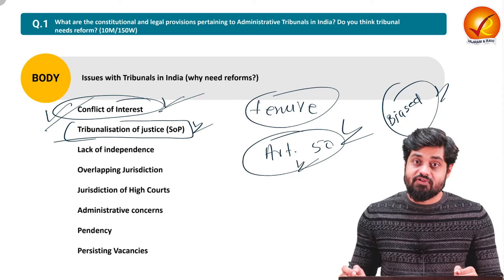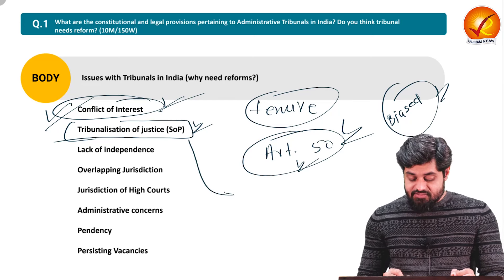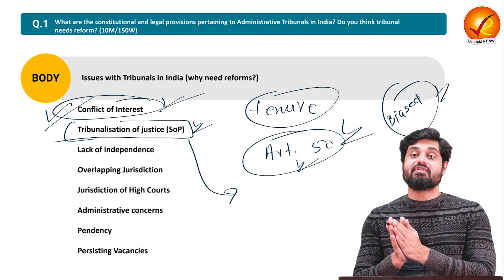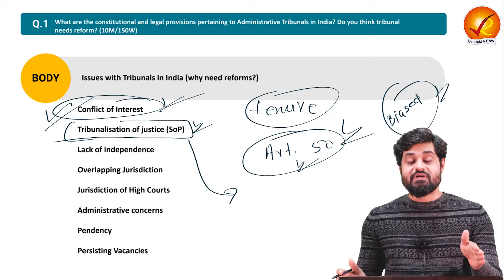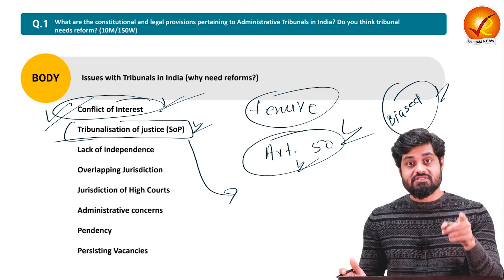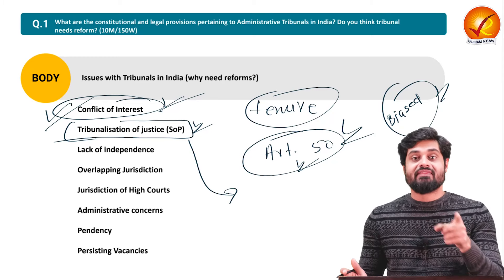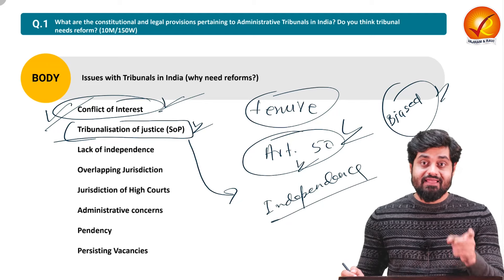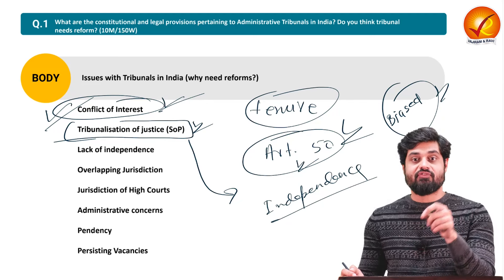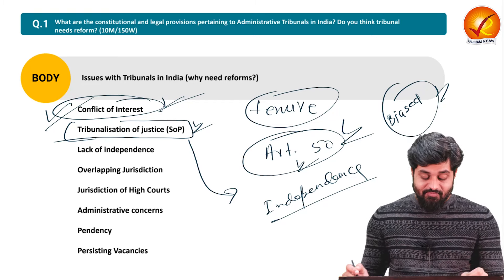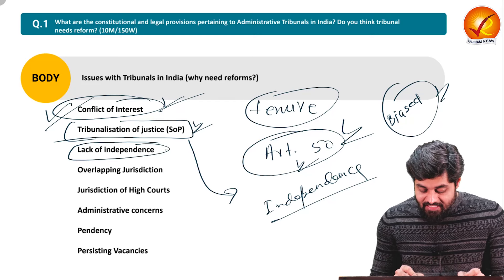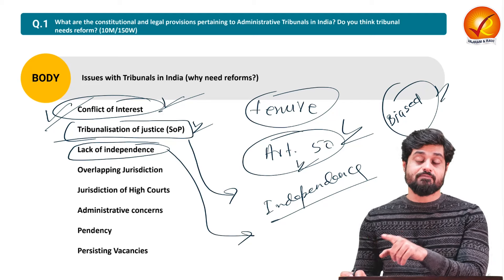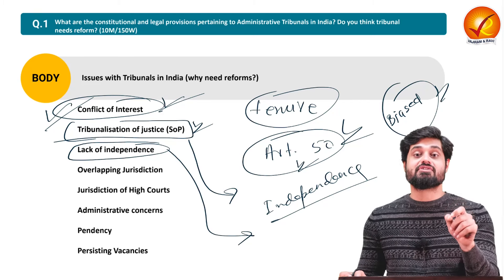The manner in which tribunals have been constituted is actually diluting the separation of power — they are taking away jurisdictions of the high courts. The Supreme Court has also highlighted in its judgment that if you want to constitute tribunals, they must have equal status to the high court. Their independence cannot be compromised — they cannot depend for their appointment, removal, or finances on the executive of the day. This leads to the next issue: lack of independence.